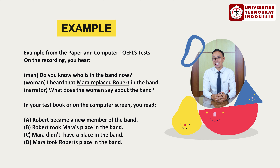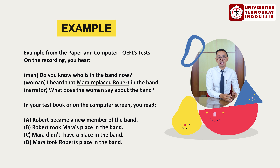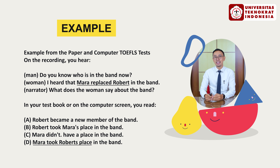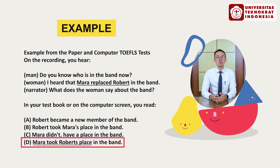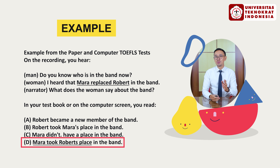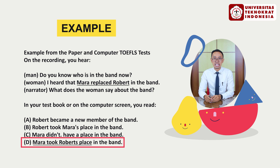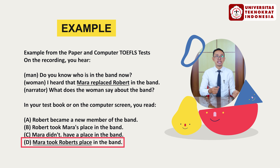Based on the woman's statement 'I heard that Mara replaced Robert in the band,' this means Mara took Robert's place in the band — so D is the best answer. Be careful with multiple nouns when listening to dialogues, because you can get confused by names like Mara and Robert, or items like banana, apple, or pineapple.